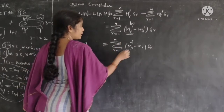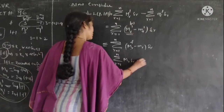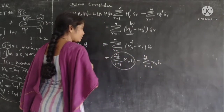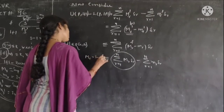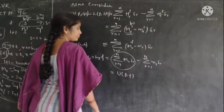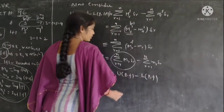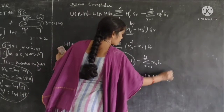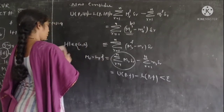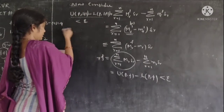This value is less than or equal to the summation of (Mᵣ minus mᵣ) times Δr, where Mᵣ and mᵣ are the bounds of f on each sub-interval, which equals U(P,F) minus L(P,F). Since F is a Riemann integrable function, this value is less than epsilon. By transitivity, U(P,|F|) minus L(P,|F|) is less than epsilon.